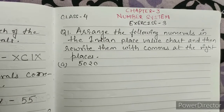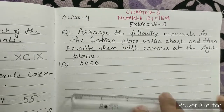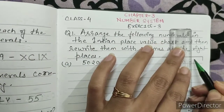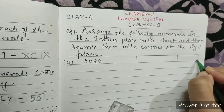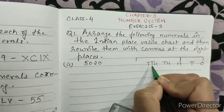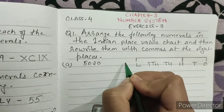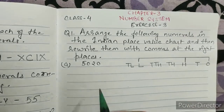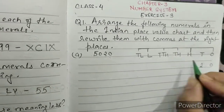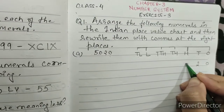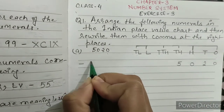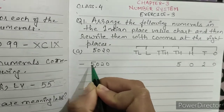Part a) 5020. First of all we will make the chart: ones, tens, hundreds, thousands, ten thousands, lakhs, ten lakhs. So for 5020: 0 is at ones place, 2 is at tens place, 0 is at hundreds place, and 5 is at thousands place. We will write it as 5,020 — ones, tens, hundreds, then comma, then 5. So the answer is 5,020.